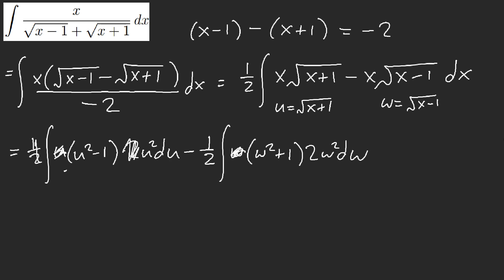And then u squared, we have u to the fourth minus u squared. Here, this one's w to the fourth plus w squared. And so what we have here is we can go ahead and just instantly write this out.